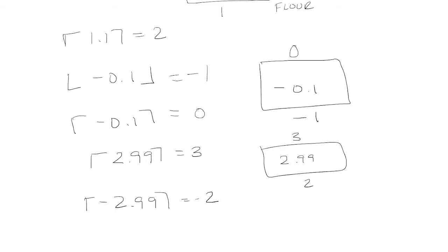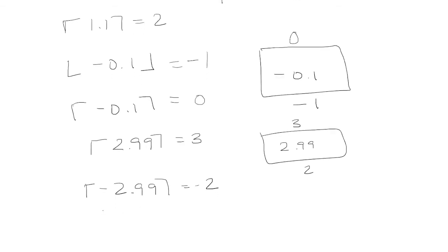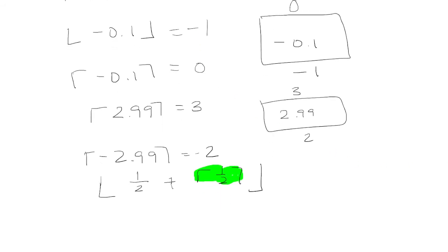Now we can do some more operations using the floor and ceiling functions. Let's take a look at the floor of 1/2 plus the ceiling of 1/2. Think of this as order of operations — first, find the ceiling of 1/2. Ceiling means you want to round it up, so rounding up 1/2 would give 1. So we have 1/2 plus 1, which is 1.5. If you round down 1.5, that rounds down to 1, and that's our answer.